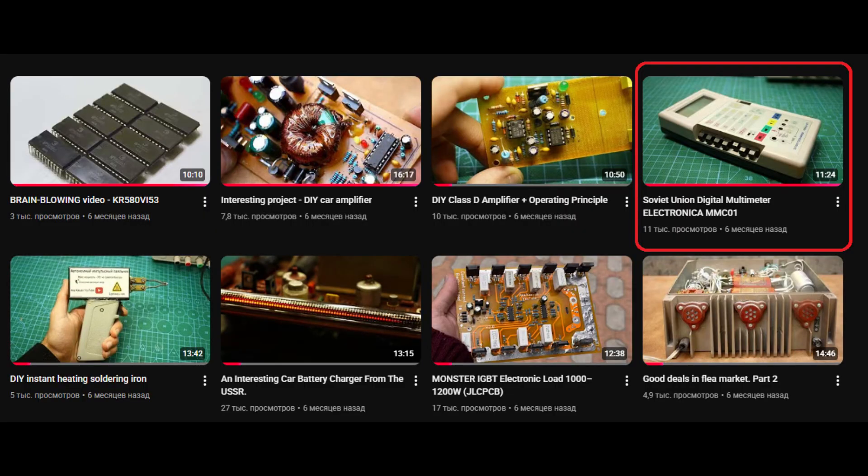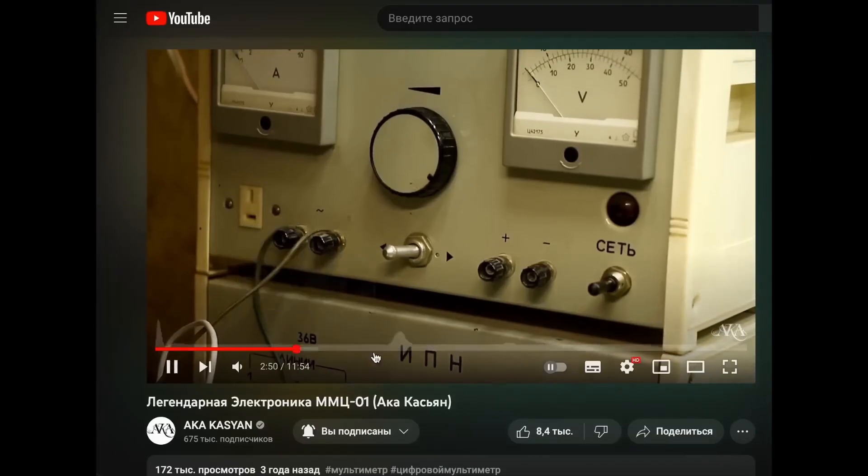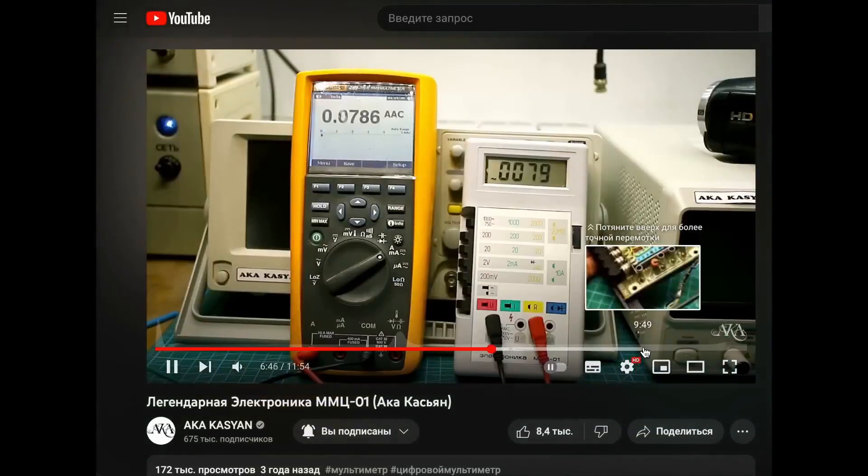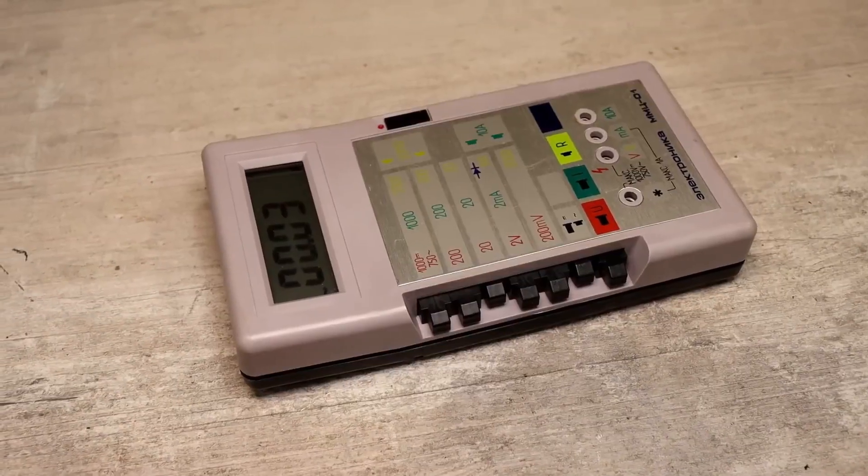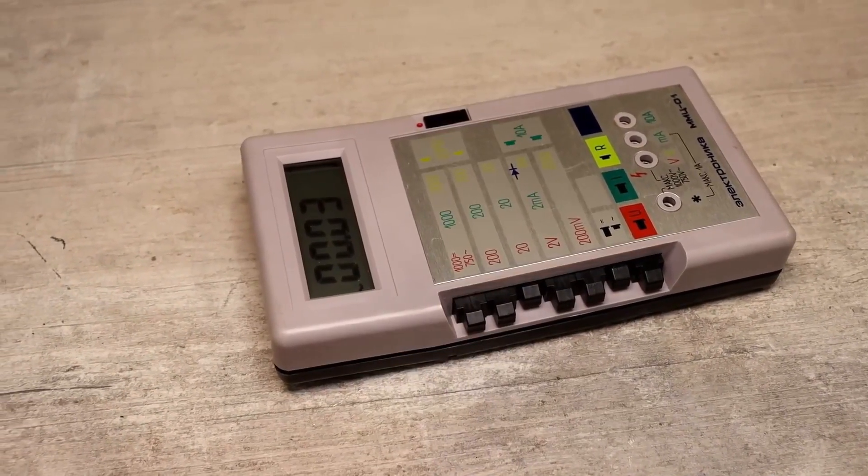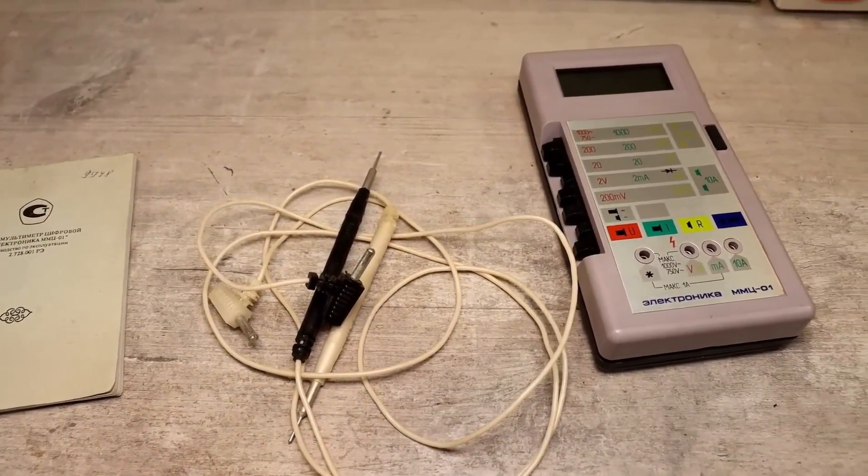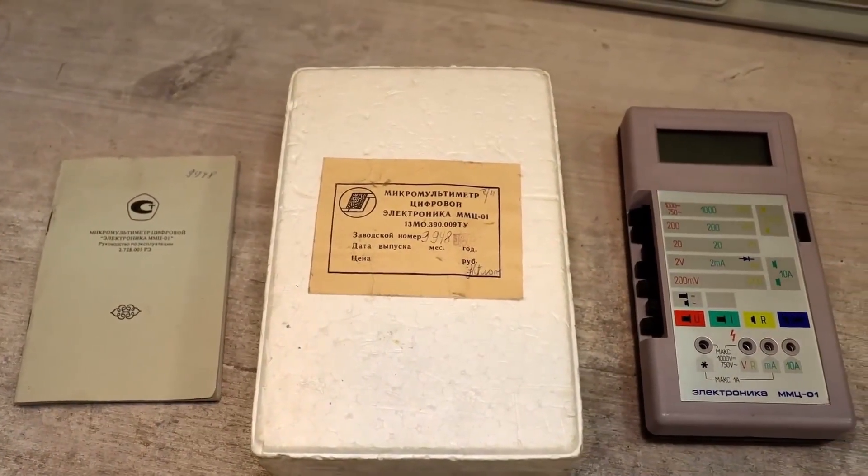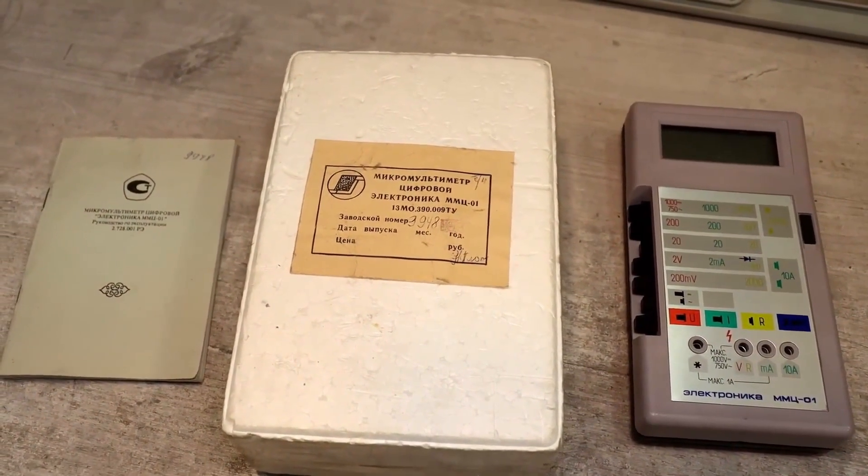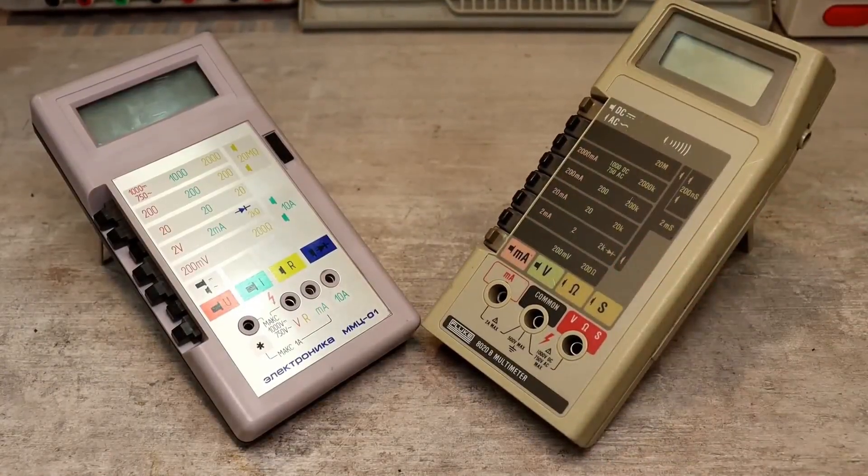A few years ago, I made a review of a very interesting Soviet digital multimeter called Electronica MMC1. You can watch the mentioned video via the link in the description. I have several of these devices, and quite some time ago, I acquired another similar multimeter, and it's completely new straight from storage. This device was purchased not just for the sake of it, but to pit it head-to-head against its direct American competitor, the 8020 from the legendary Fluke.